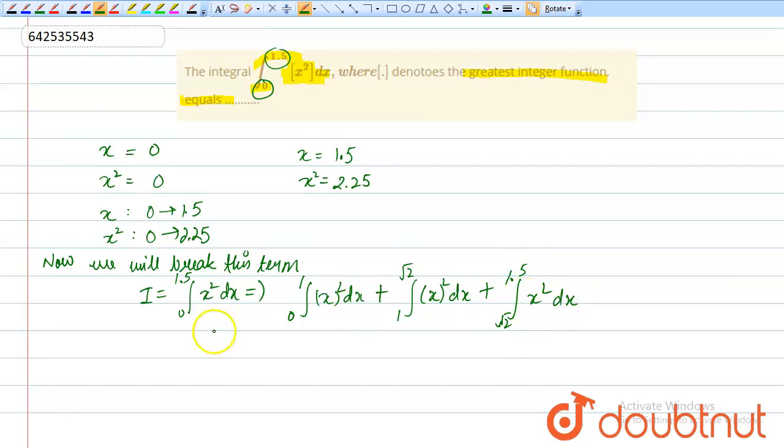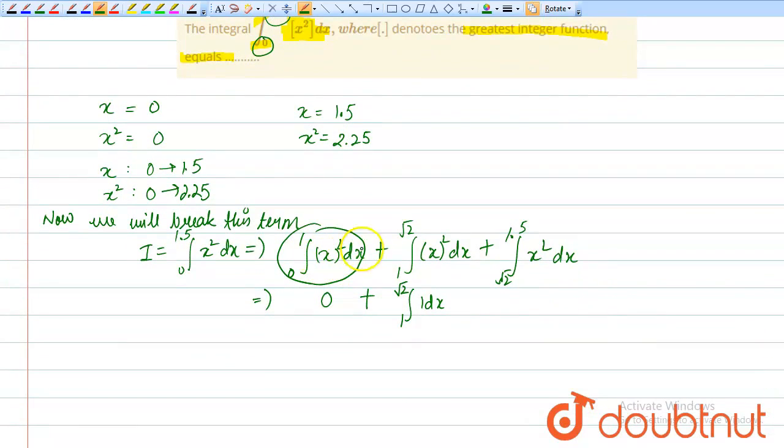Solving each interval: from 0 to 1, [x²] equals 0. From 1 to √2, the greatest integer function value is 1. From √2 to 1.5, the GIF value is 2.